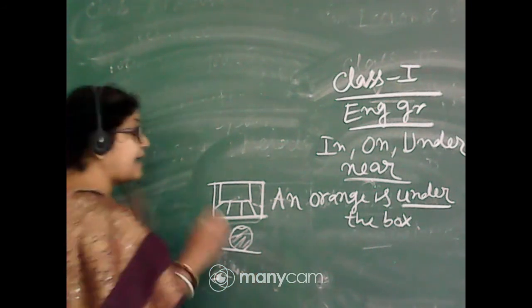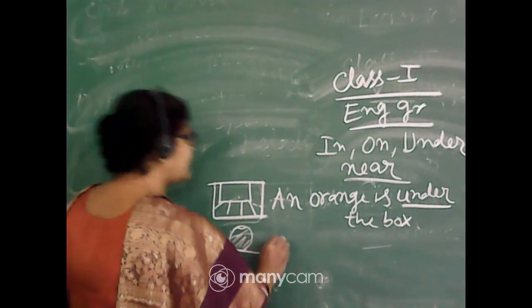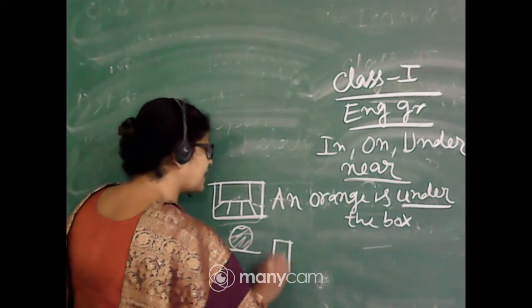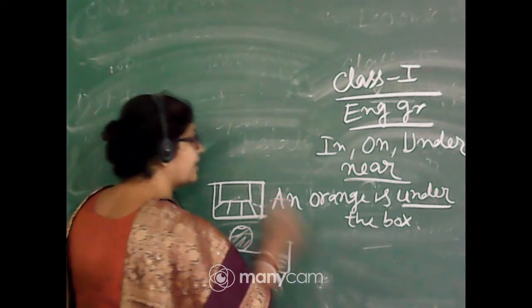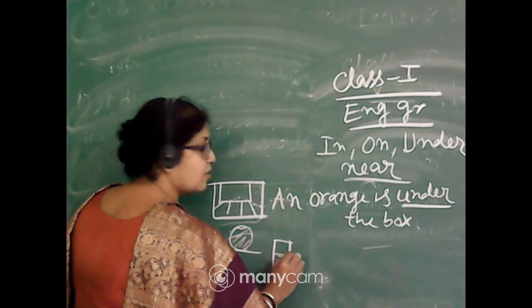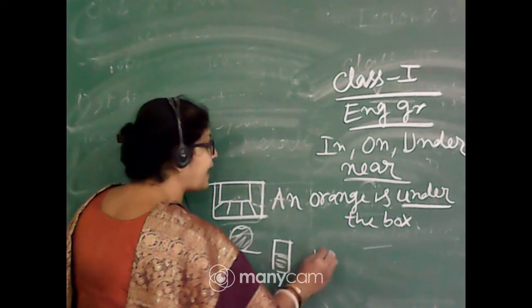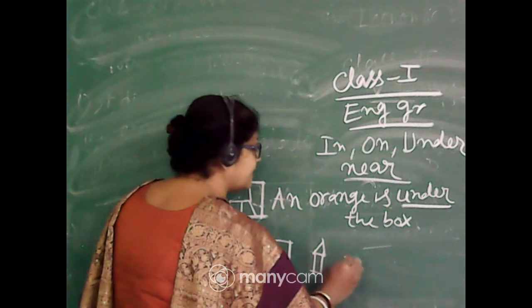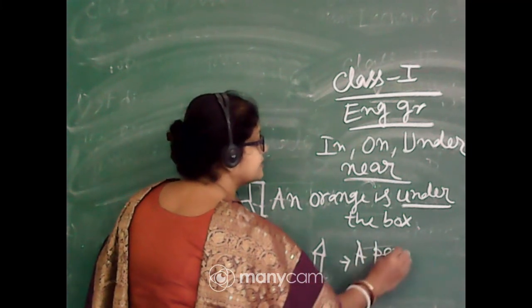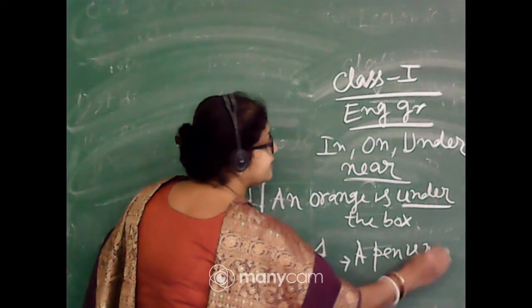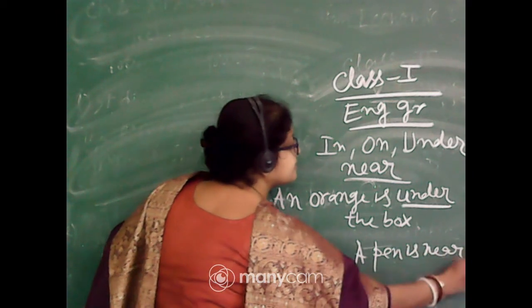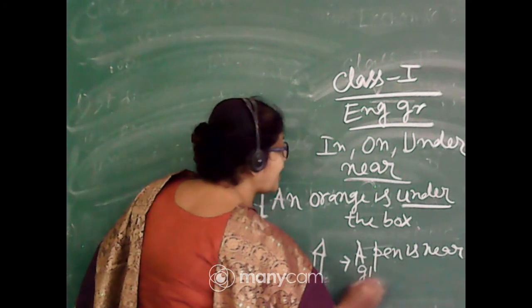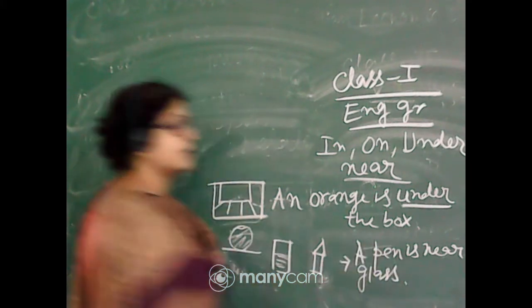And if I am telling here one glass is there, and here what I can write: one pen or pen or pen shield. So I can write here: a pen is near the glass. Near, under, in, and on. I think you have understood.